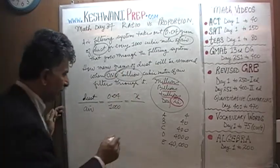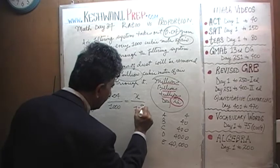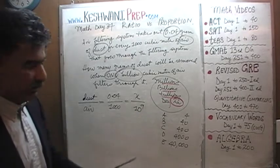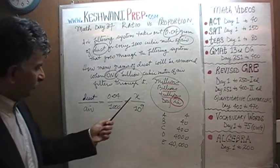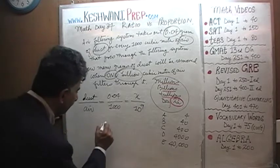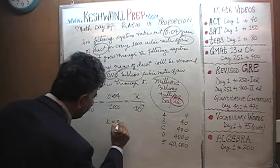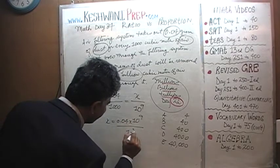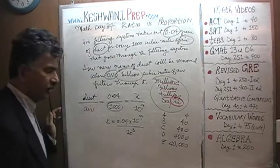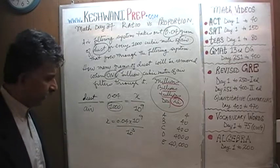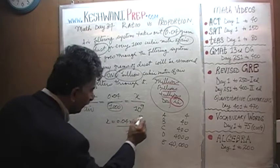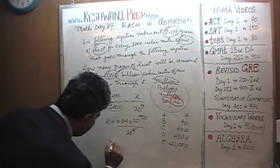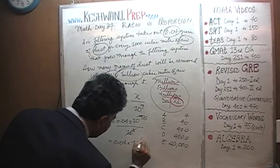1,000,000,000 is 10 to the 9th. We just have to solve for x, which is going to be 0.04 times 10 to the 9th over 1,000, which is simply 10 to the 3rd. 10 to the 9th divided by 10 to the 3rd is simply going to be 10 to the 6th.